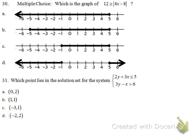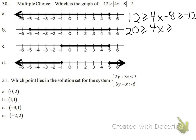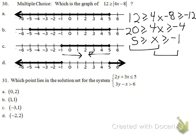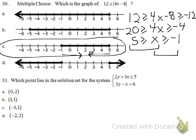Number 30: graph 12 ≥ |4x - 8|. Writing as compound inequality: -12 ≤ 4x - 8 ≤ 12. Add 8: -4 ≤ 4x ≤ 20. Divide by 4: -1 ≤ x ≤ 5. The shading goes between -1 and 5 with closed dots — values go toward each other. The answer is C.